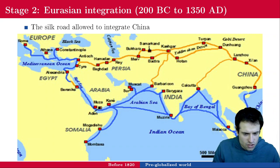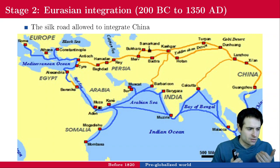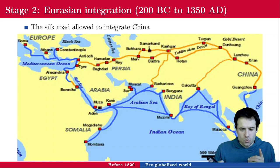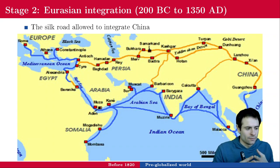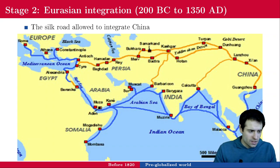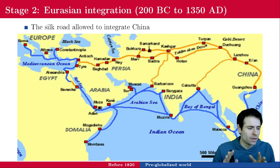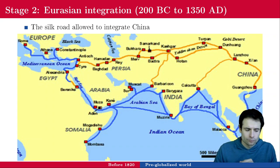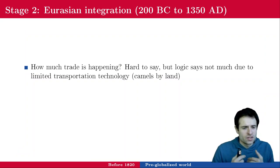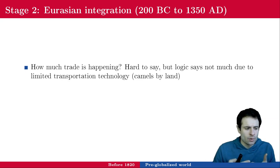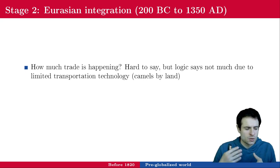During the Silk Road phase, how much trade was happening? Probably not much, due to limited transportation technology. You can use camels by land, but think about how many camels you need to ship goods from China to Mesopotamia. One kilogram of goods per person per week would require a daily camel train 52 kilometers long — fully loaded. Not all the camels survive the trip, and there's also the cost of keeping them alive and maintaining the roads.